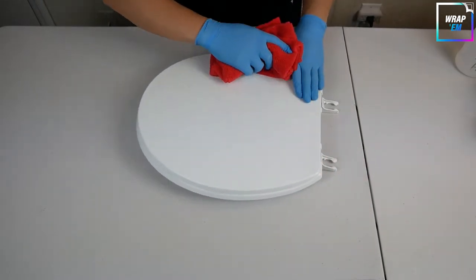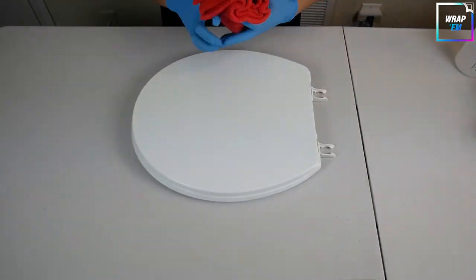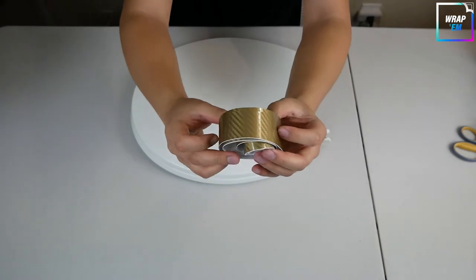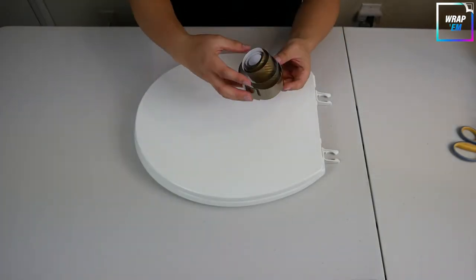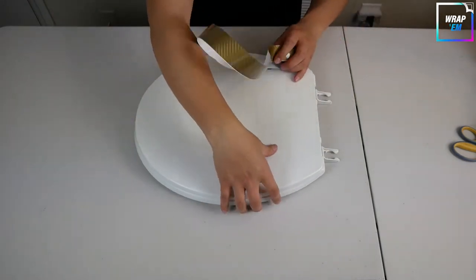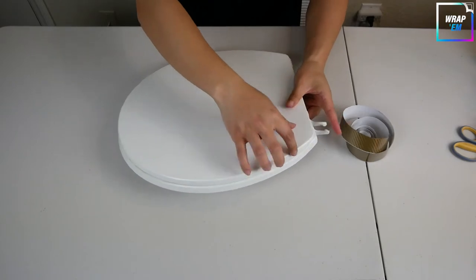Wipe it clean and make sure it's free of dust. We have a long strip of gold vinyl with a carbon fiber pattern to it. Now we are going to lay it along the entire perimeter of the seat cover.